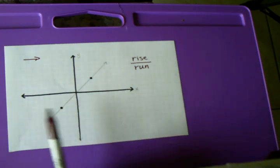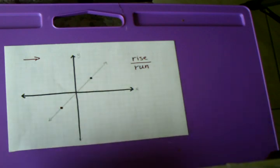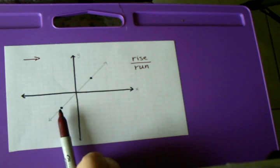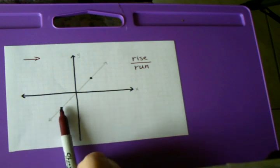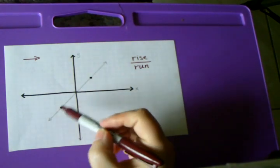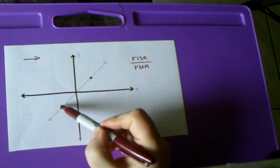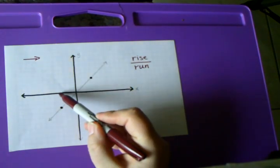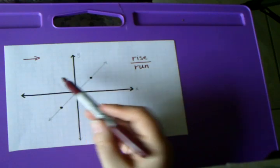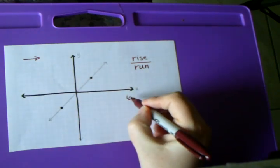We are always going to move from the left to the right, just like we read a book, and we're going to start with the point that's always on the left — in this case, that's the point down here. I'm going to count how many lines it takes to go from this point until I'm even with the next point. I go up one, two, three, four, five, six. So my rise is six.